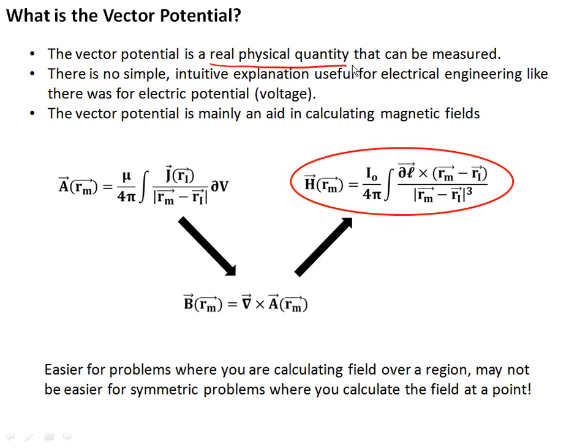But it's something you don't see a lot in engineering. It's not like a voltage that you're going to pull out of a DMM or an oscilloscope and measure. It's not something we measure or use on a day-to-day basis. There's no simple intuitive explanation that you'll use in electrical engineering like there is for electric potential. And so for this reason, we treat it more as a mathematical operation. And so a lot of books and most books will actually describe the vector potential as an aid in calculating magnetic fields.